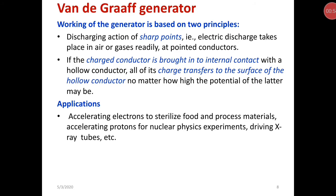The working of the generator is based on two principles. First is the discharging action of sharp points: electric discharge takes place in air or gases readily at point conductors. Second: if a charged conductor is brought into internal contact with a hollow conductor, all of its charge transfers to the surface of the hollow conductor, no matter how high the potential of the latter may be.